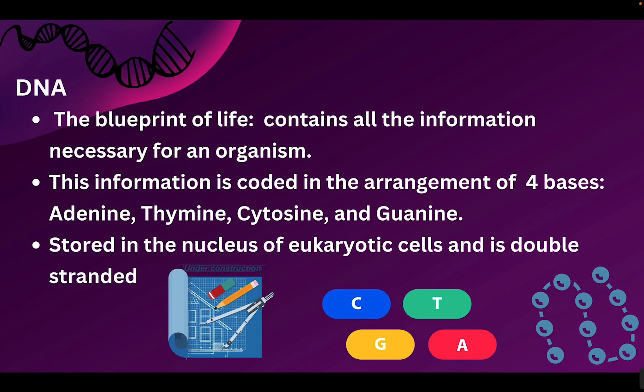Now these four letters might not seem like much, but the arrangement of them — how many A's you have versus how many C's and in what pattern they go — is what gives us the variety of life that we have. For eukaryotic cells like plants and animals, this DNA is going to be stored inside the nucleus, and it's important we remember that when we get to the process of protein synthesis. DNA is also double stranded, so being double stranded and in the nucleus is important to remember.